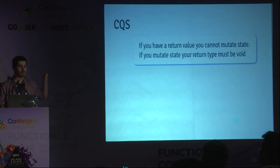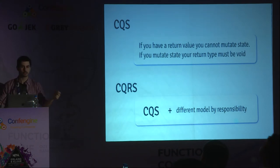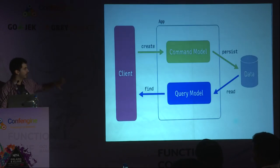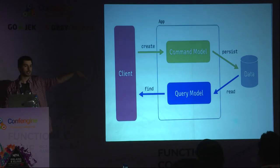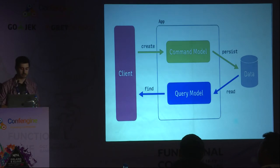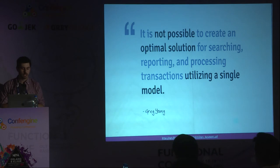The difference with CQRS is that CQS allows a class or module to have commands and queries all together. CQRS takes CQS and adds an extra layer saying that each responsibility — commands and queries — must be on separate models, separate classes or modules. So you have a command model that you send commands to, which will persist data to the database, and a query model you do queries on. In this example they're on the same application, but that's not necessarily true — they can be in different applications. The idea behind CQRS is that it's not possible to create an optimal solution for every situation using just a single model.